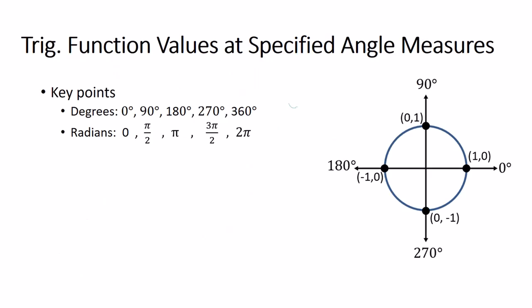Now we're going to learn how to find trig function values at specific angle measures. We'll start with angles that are 0, 90, 180, 270, or 360 degrees — in radians, that's 0, pi over 2, pi, 3 pi over 2, or 2 pi.